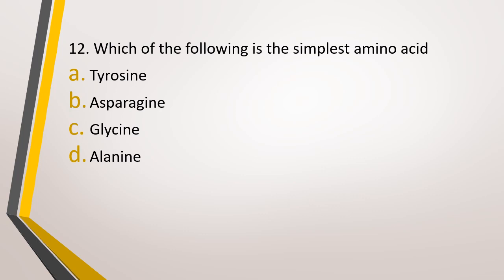Question number 12. Which of the following is the simplest amino acid? Option A, tyrosine; option B, asparagine; option C, glycine; option D, alanine. The correct answer is option C — glycine is the simplest amino acid.